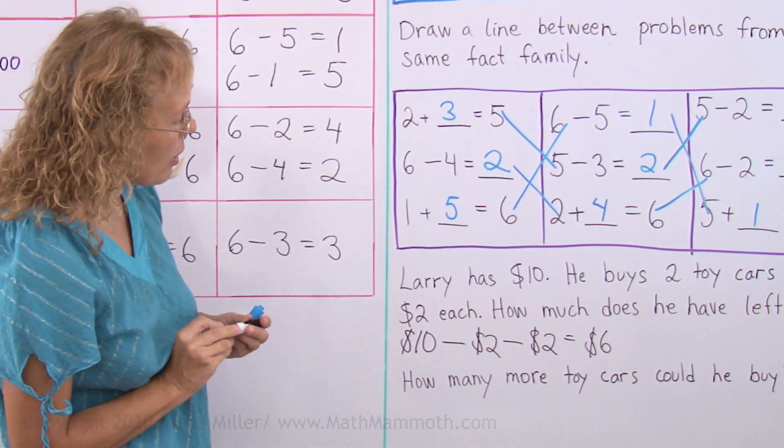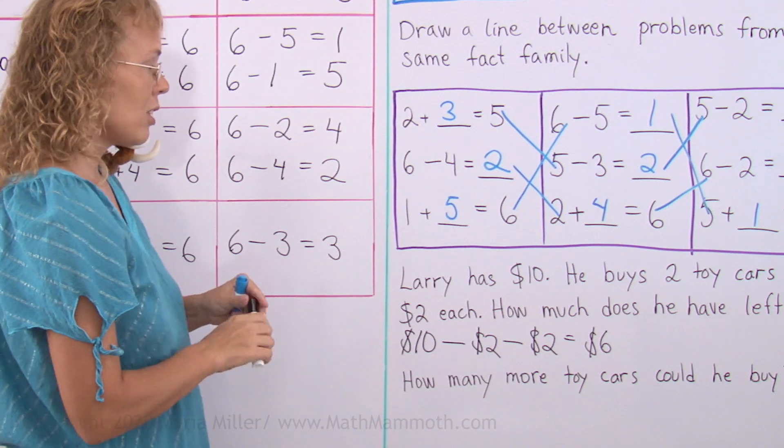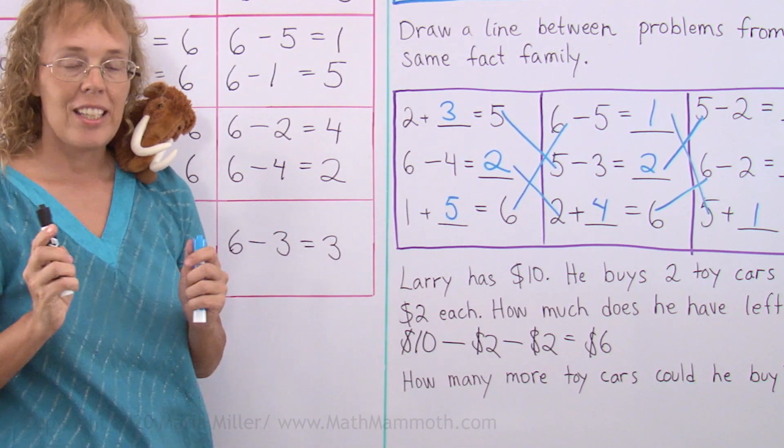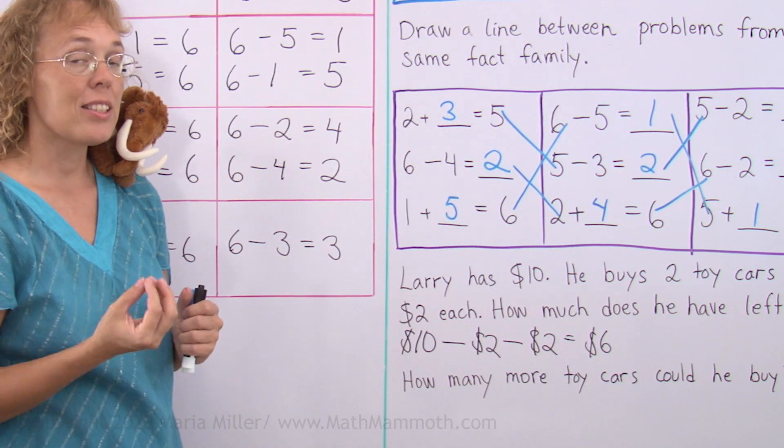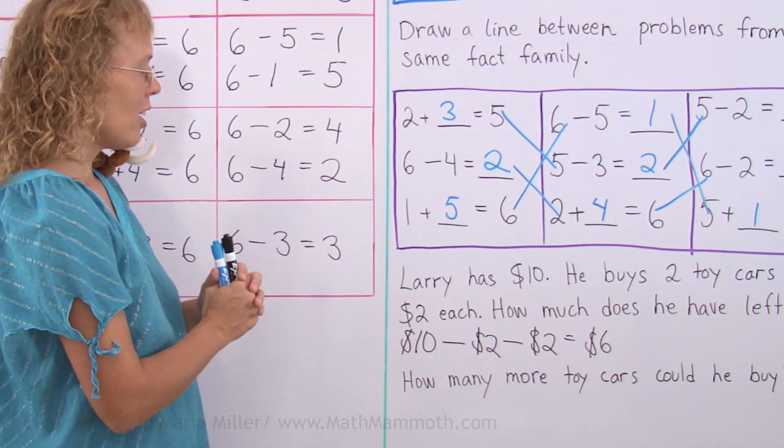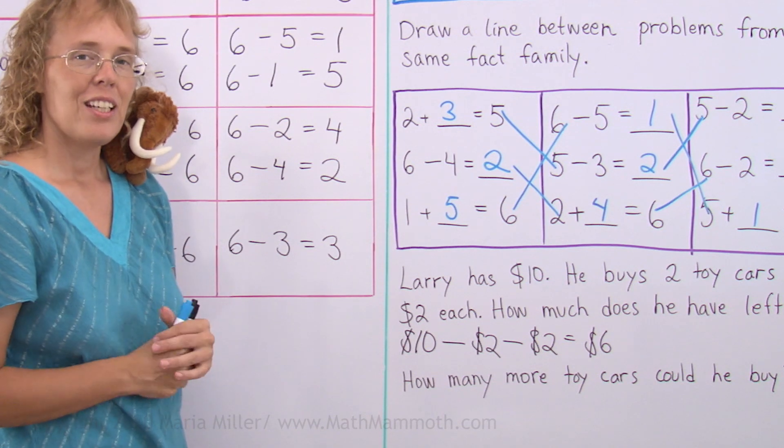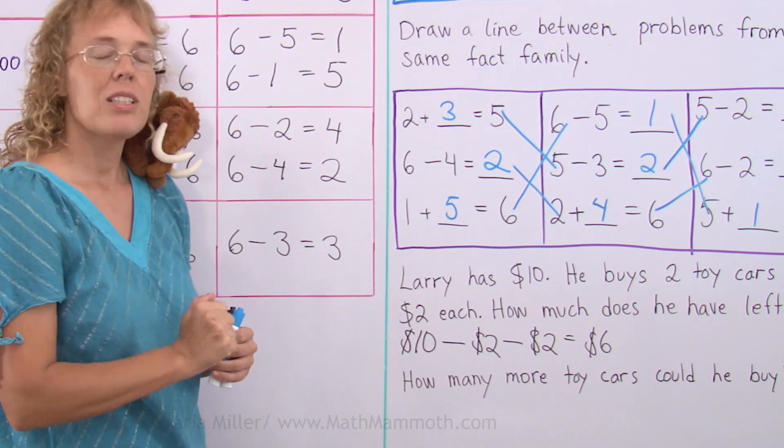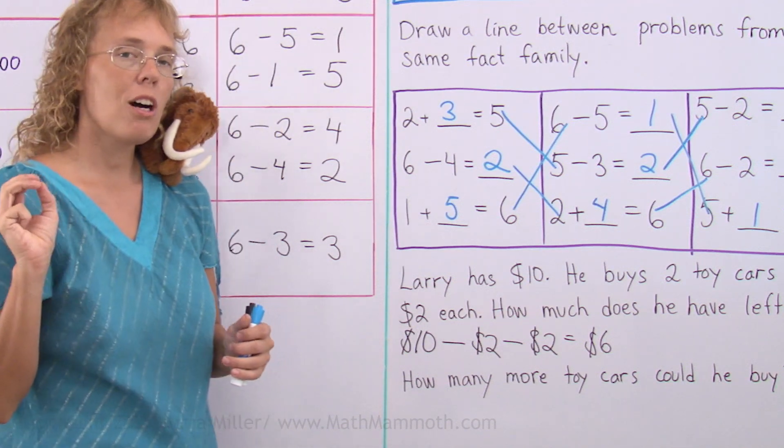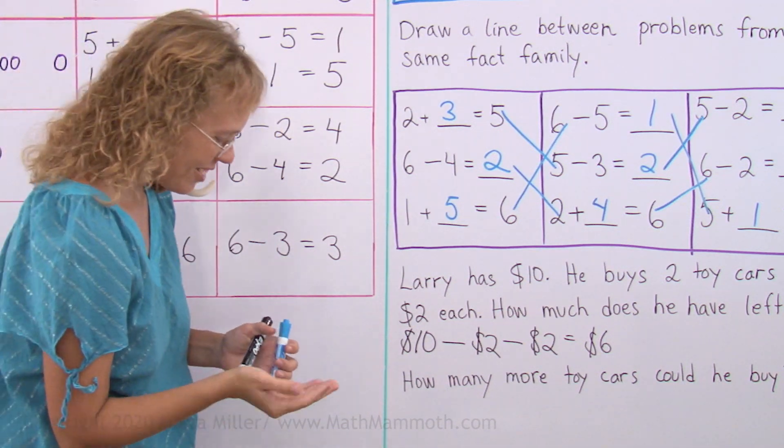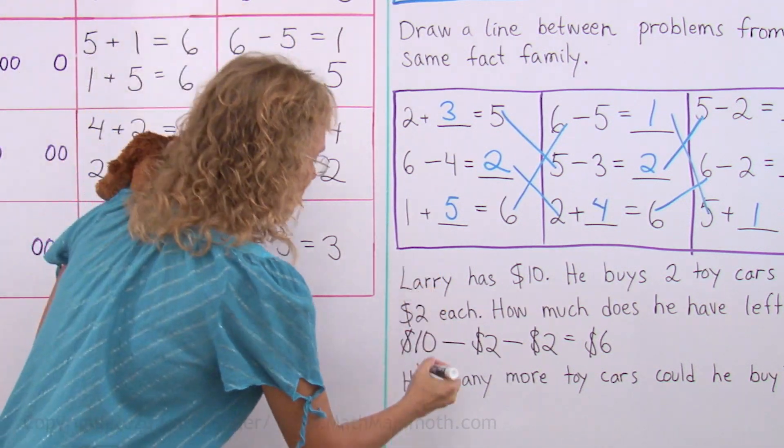Now, how many more toy cars could he buy? Okay, he has $6 now. How many toy cars could he buy with this $6? Each car costs $2. One car, $2. Two cars would cost $4. And three cars would cost $6, right? He could buy three more cars.